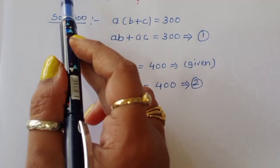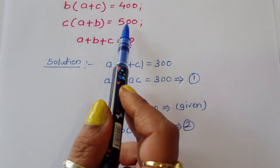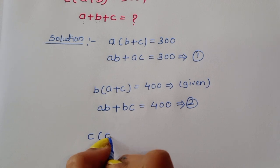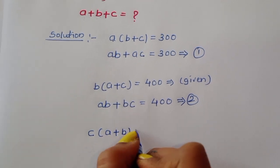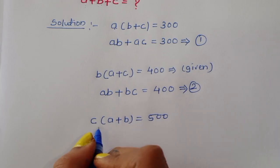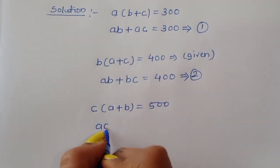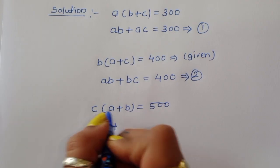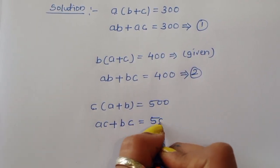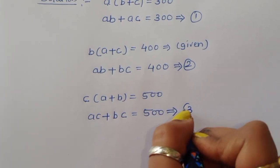Last one: C times (A plus B) is equal to 500. Expanding, AC plus BC is equal to 500. This is equation number 3.